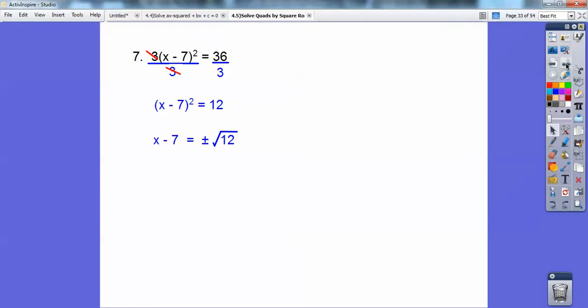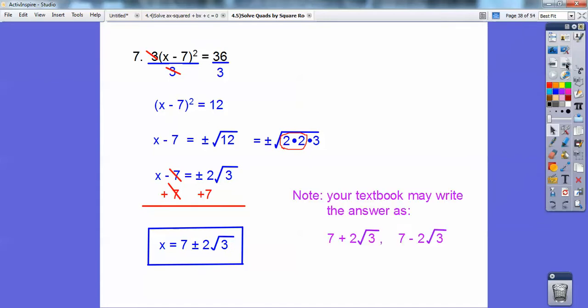But it's just x minus 7 squared equals 12, so the square root, 12 is 2 times 2 times 3, so I get x minus 7 equals plus or minus 2 root 3, and then add 7 to both sides, you get x equals 7 plus or minus 2 root 3. Your textbooks will probably write, at least mine does, 7 plus 2 root 3, 7 minus 2 root 3. I like it like this better, but whatever.